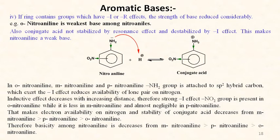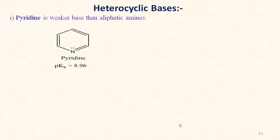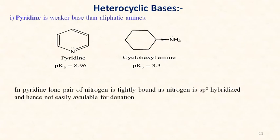For heterocyclic bases, pyridine is a weaker base than aliphatic amines. Pyridine has pKb value 8.96 while cyclohexylamine has 3.3. In pyridine, the lone pair on nitrogen is tightly bound as nitrogen is sp²-hybridized and hence not easily available for donation.